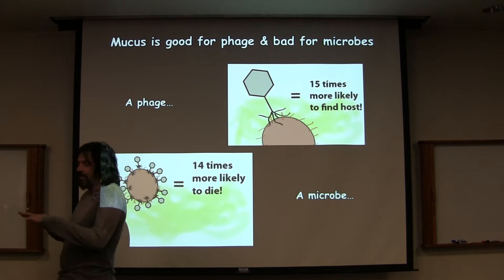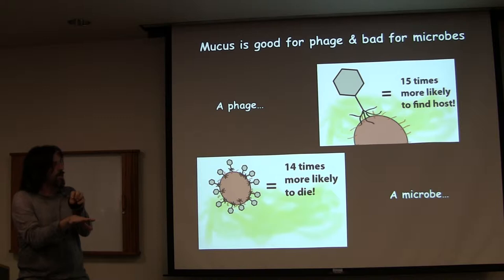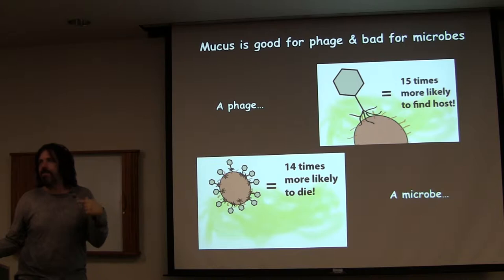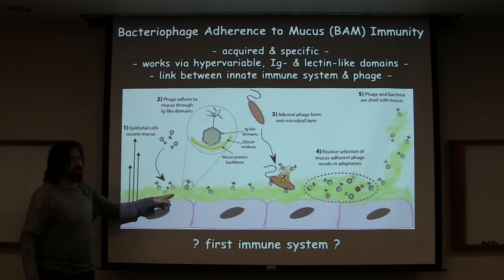So now you can imagine all mucosal surfaces are recruiting phage, and any time a microbial community comes into contact with it, the microbes die. That gives you more phage and reduces your bacterial load, and it all happens exactly where you want it — right at the mucosal surface.